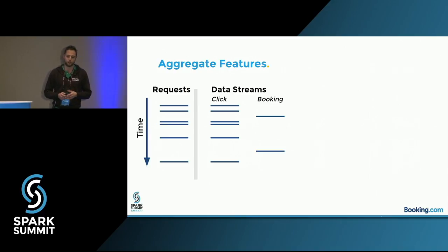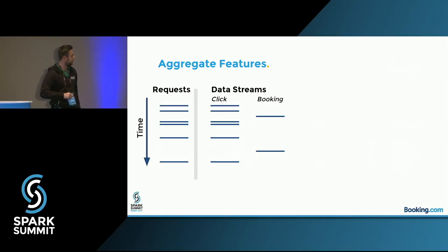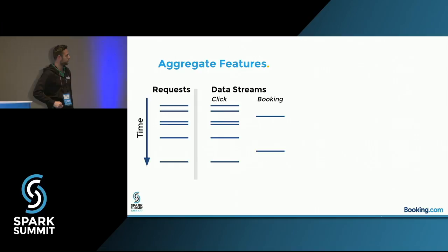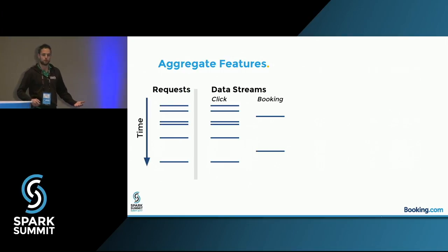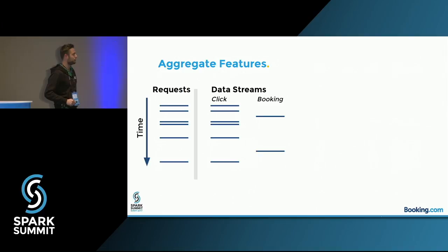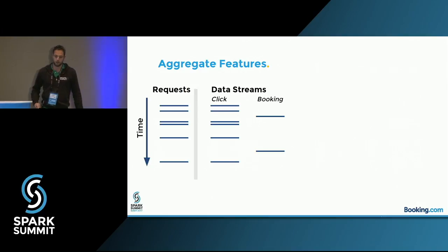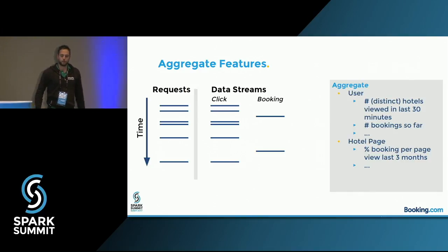The way the data looks: you have requests to the engine coming in over time, and simultaneously they generate data you might want to aggregate over — for example, the distinct number of hotels a person has viewed. Every time you click on a hotel, you generate a data point. And here are the reservations — so maybe a hotel view actually resulted in a reservation.